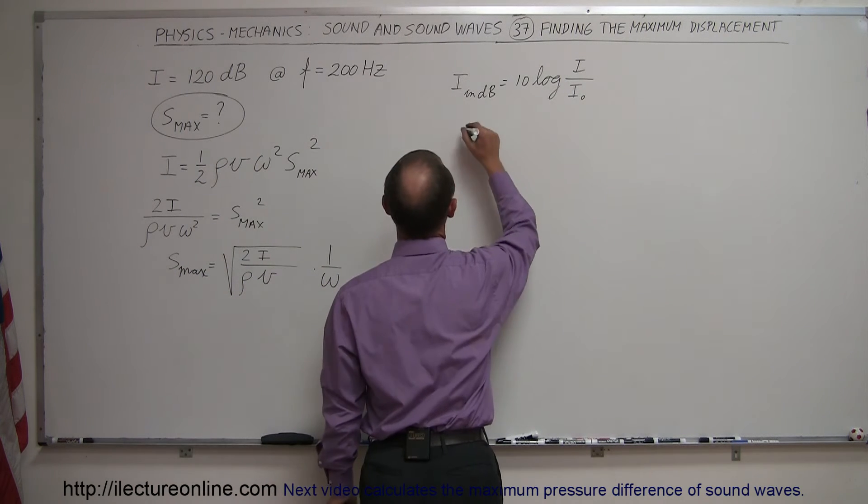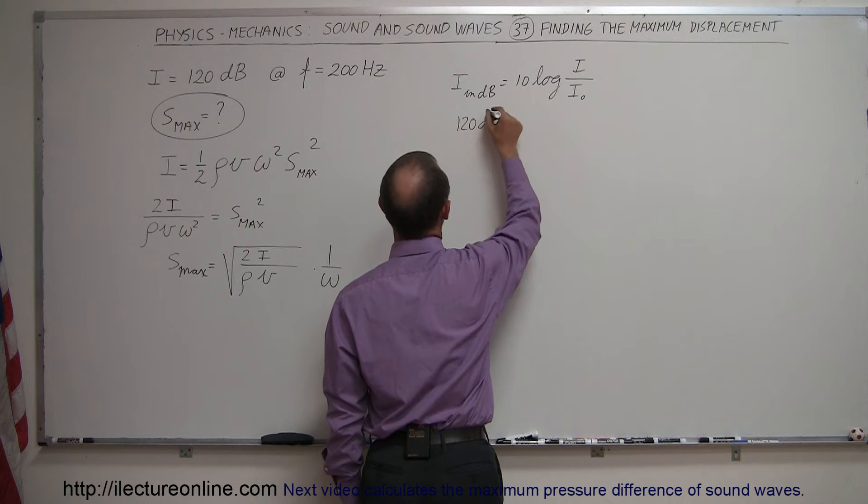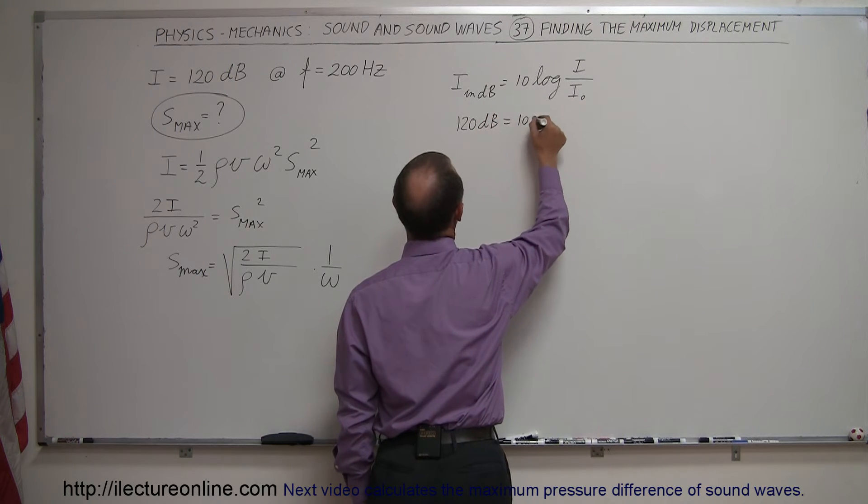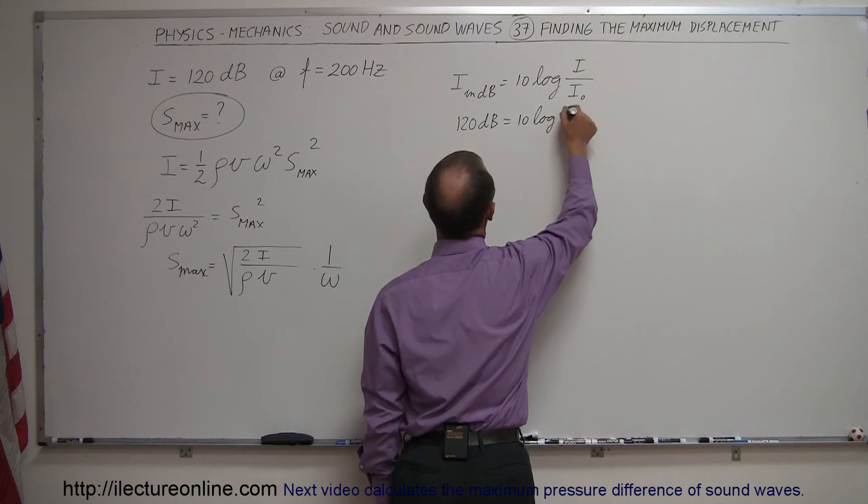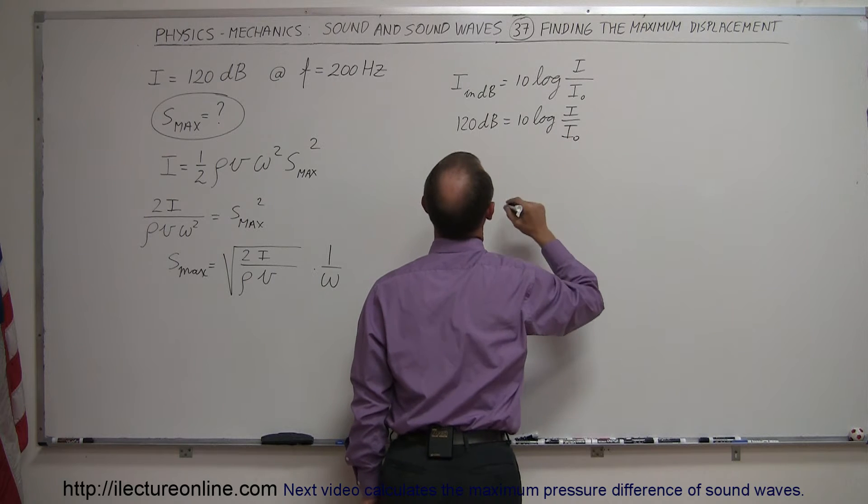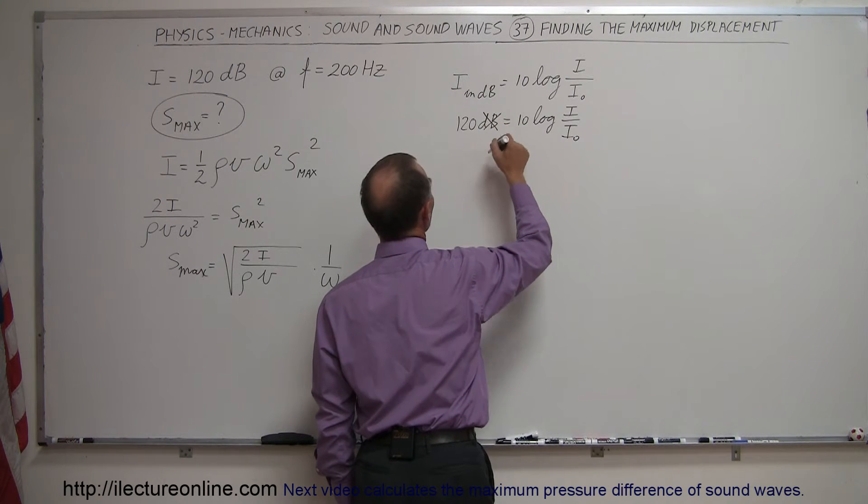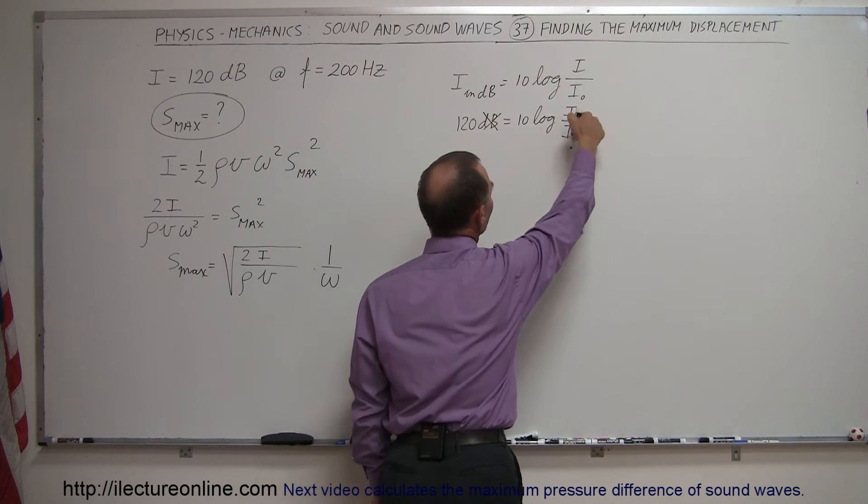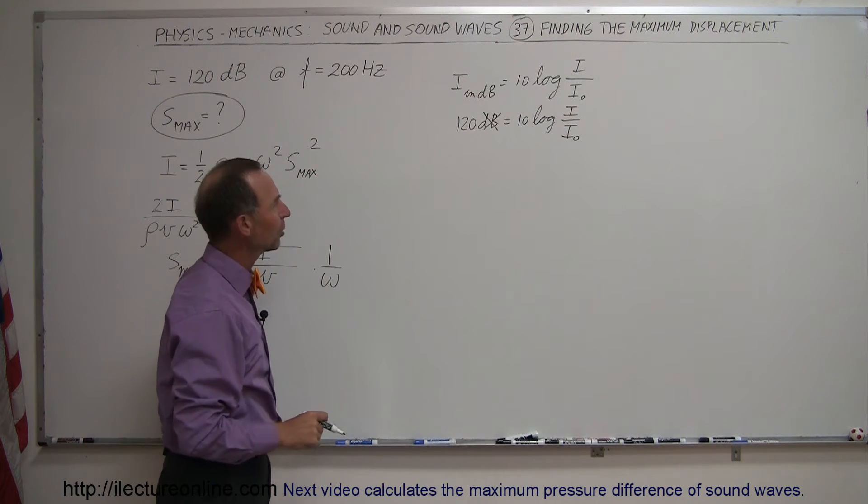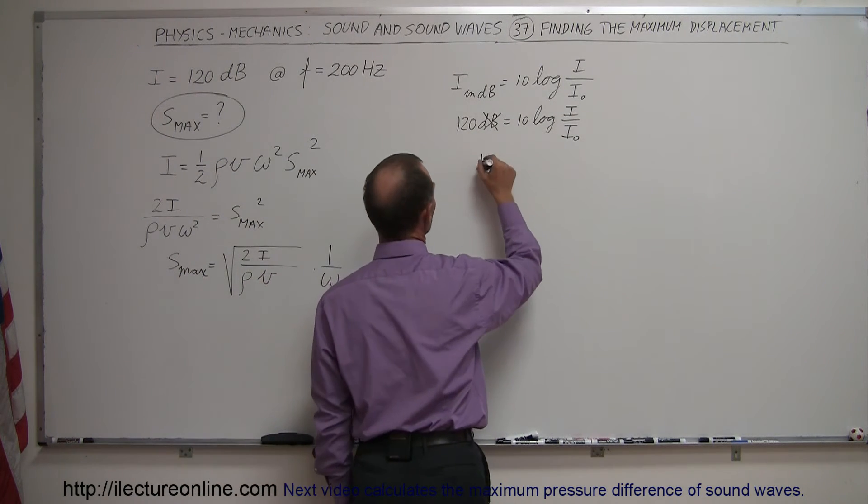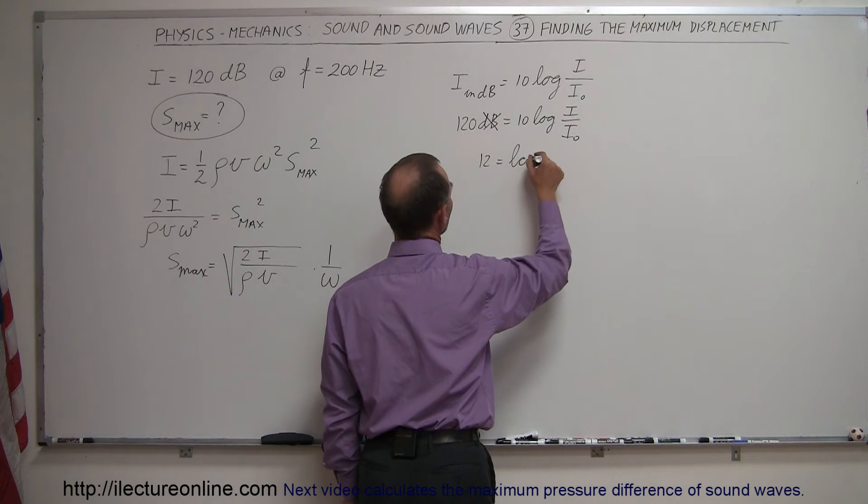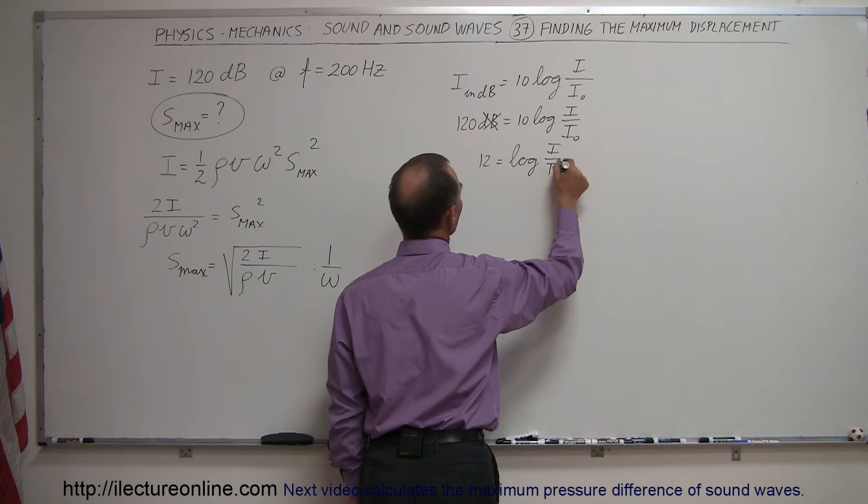When we plug in the numbers, we have 120 decibels is equal to 10 times the log of I over I_0. We're going to get rid of this now because that will allow us to find the number I. We divide both sides by 10, we get 12 is equal to the log of I divided by I_0.